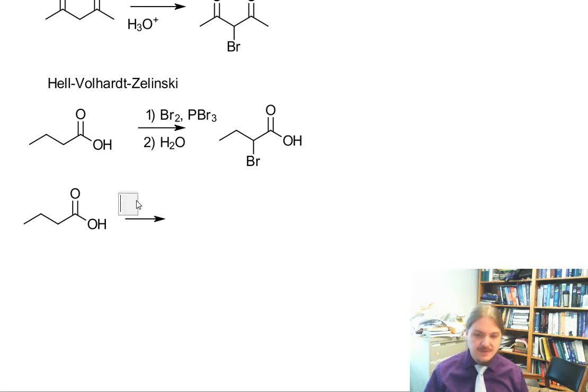We know PBr3, phosphorus tribromide, converts carboxylic acids into acid bromides. And then this thing under these conditions is able to form an enol. So part of the trouble is that the carboxylic acid is much less likely to form an enol because the OH is an electron donating group. Bromine is electron withdrawing, so this helps.